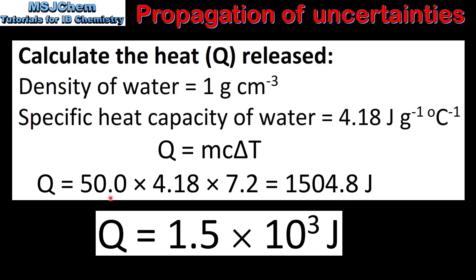In this equation the least precise value is the average change in temperature of the water. This value has two significant figures, which means our value of Q must also be written to two significant figures. So when written using scientific notation, the value for the heat released is 1.5 × 10³ joules.